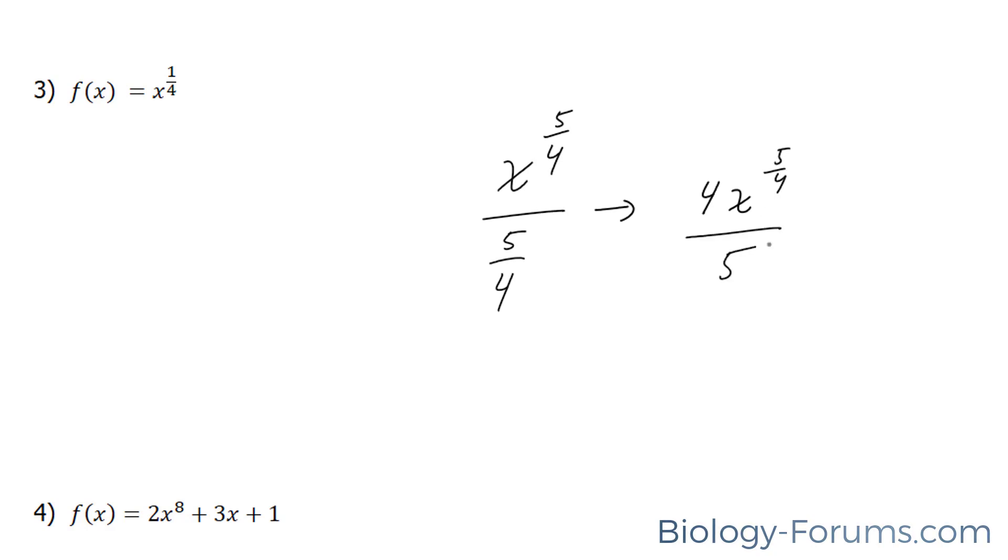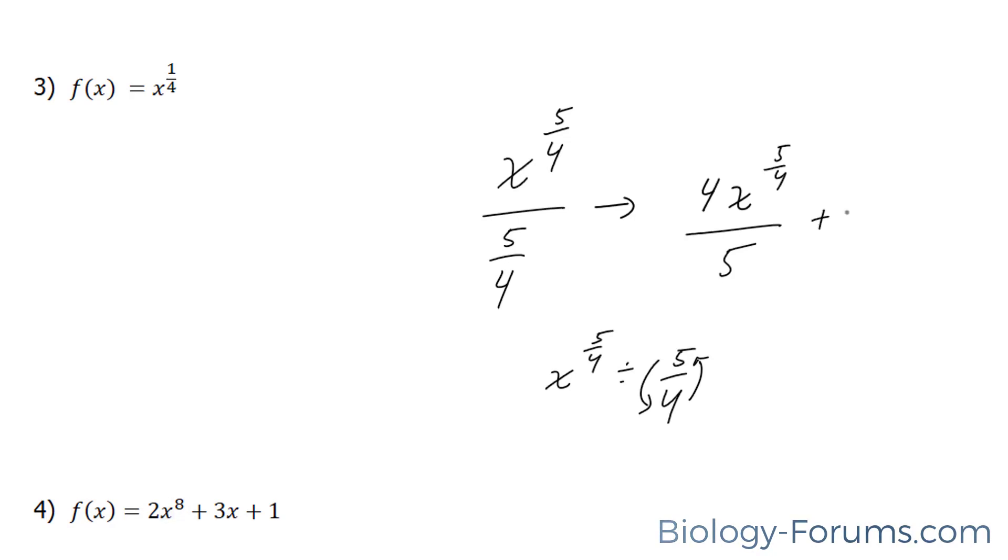All I did was rearrange the quotient, and I'll show you below in case you're confused. x to the power of 5 over 4 divided by 5 over 4. When you divide a quotient, you flip it. So this becomes 4 over 5, hence the 4 and the 5 in the denominator position. And don't forget the plus c.